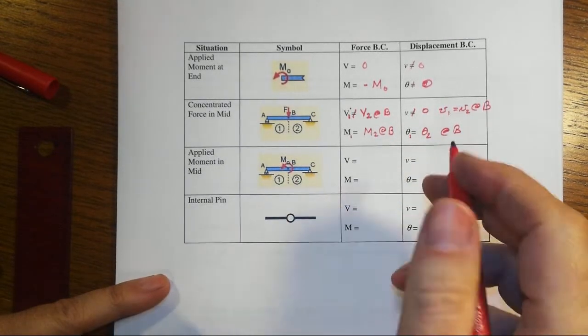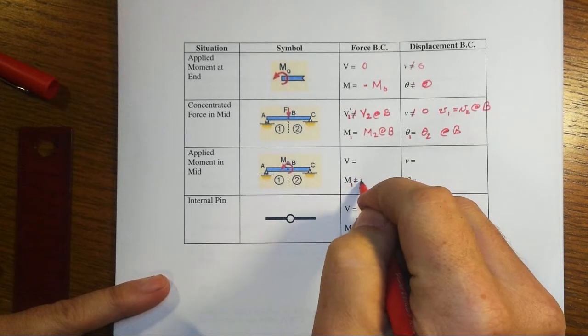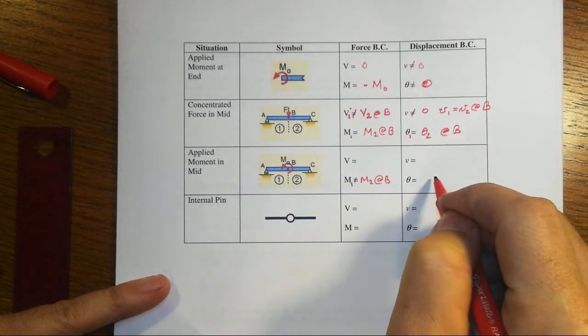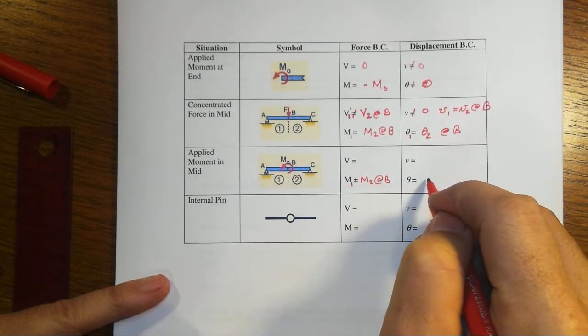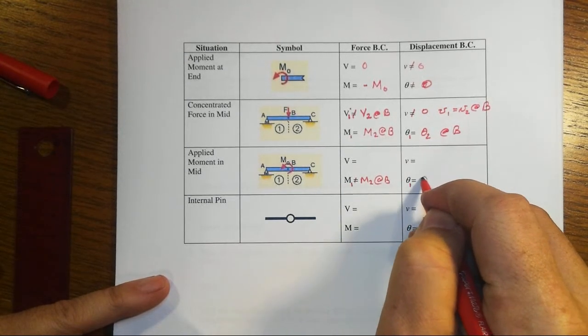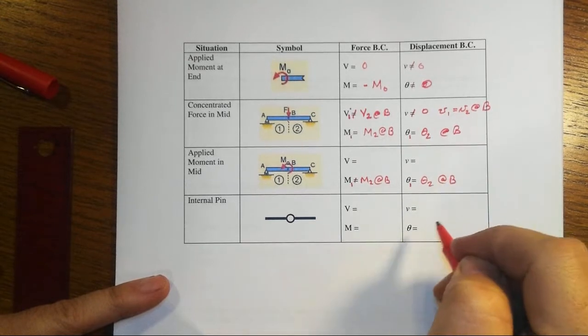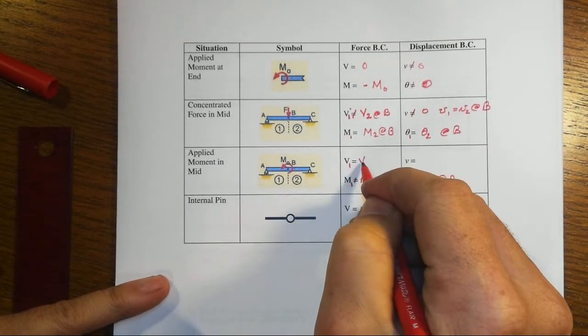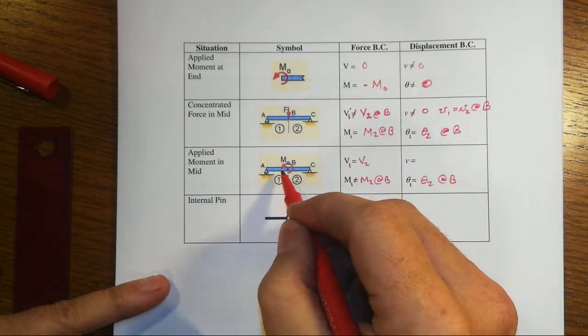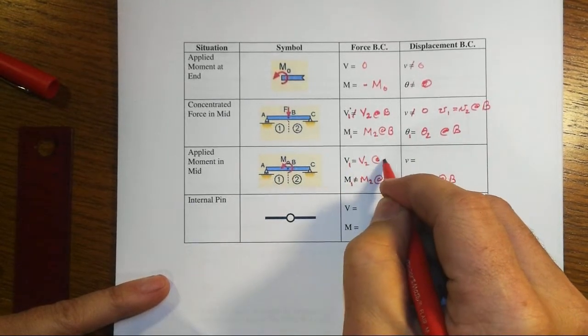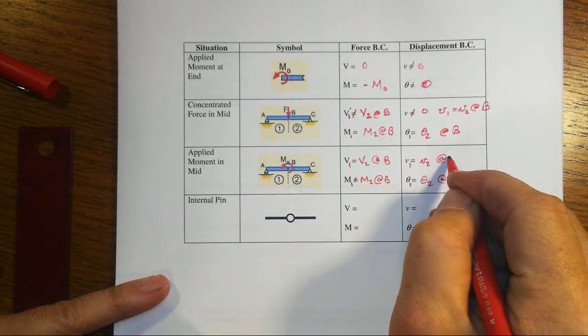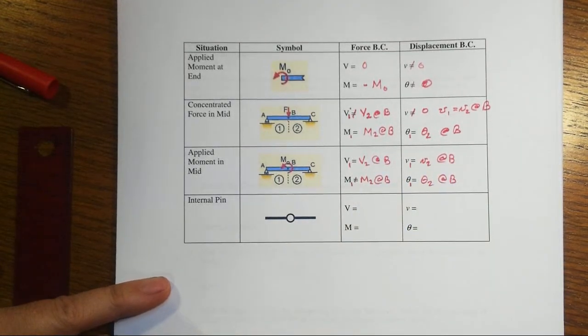Alright, similarly here, we're going to have a change in the moment from one side to the other at B. The slope, though, because we have a nice, smooth, continuous beam, then the slope is not going to change. That's going to be the same right there. The shear will equal each other on the other side of this applied couple. And the transverse deflection will also have continuity as we go across, right?